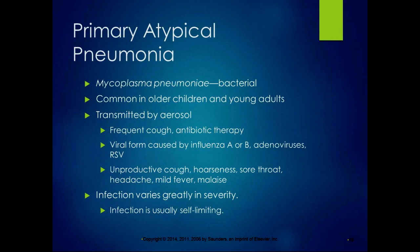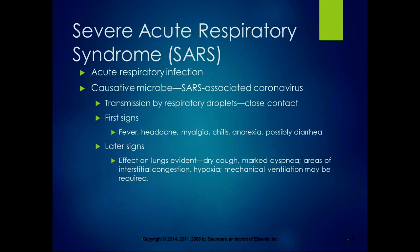Primary atypical pneumonia is a bacterial pneumonia caused by Mycoplasma pneumoniae, common in older children and young adults, transmitted by aerosol. It presents with frequent cough and is treated with antibiotic therapy. The viral form is caused by influenza A or B, adenoviruses, or RSV, with unproductive cough, hoarseness, sore throat, headache, mild fever, and malaise. Many atypical pneumonias seem like a cold at first — it's the systemic effects that differentiate them. The infection varies in severity but is usually self-limiting.